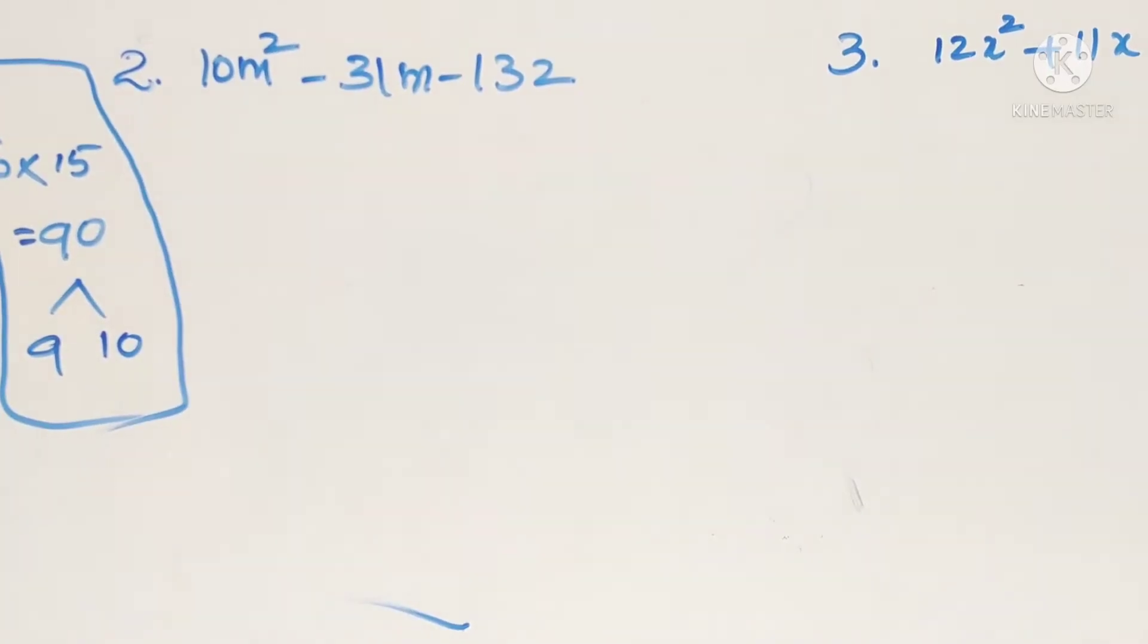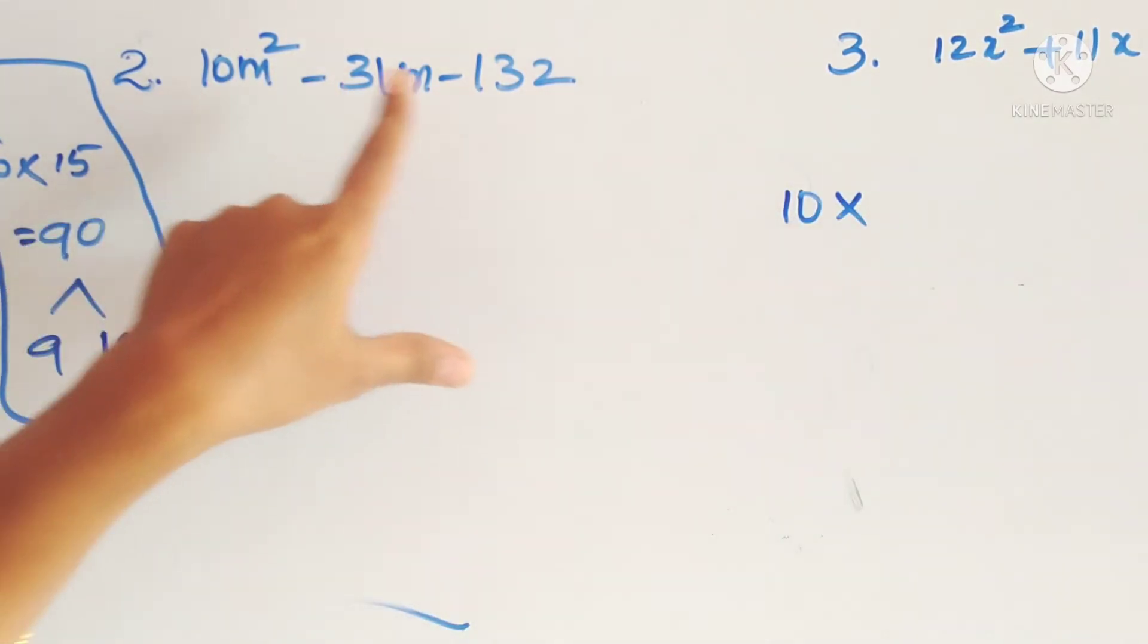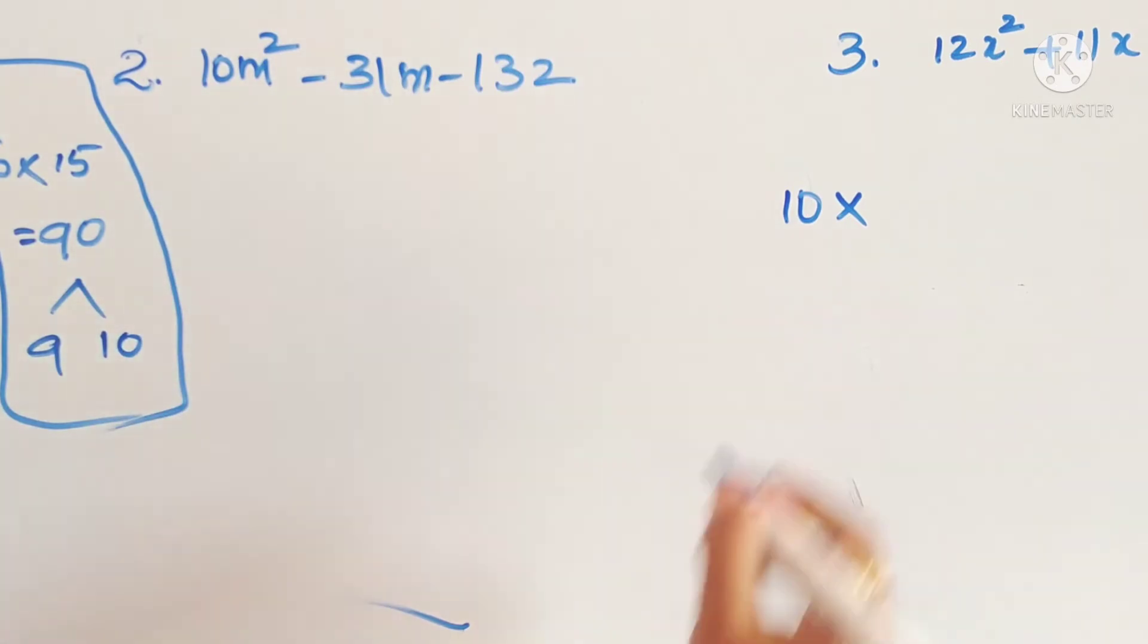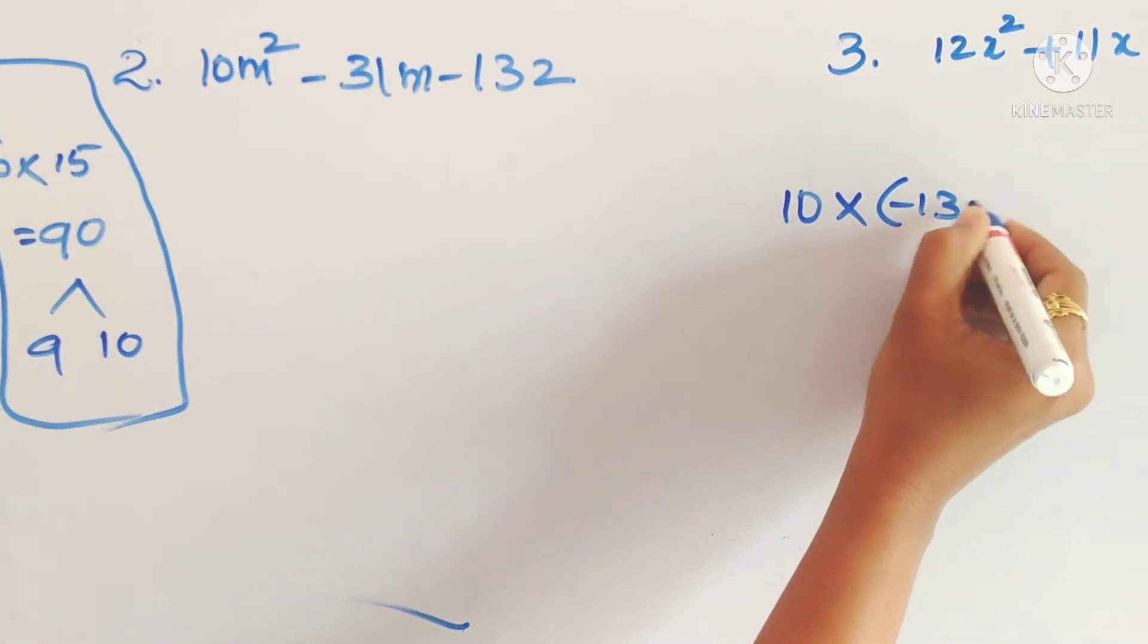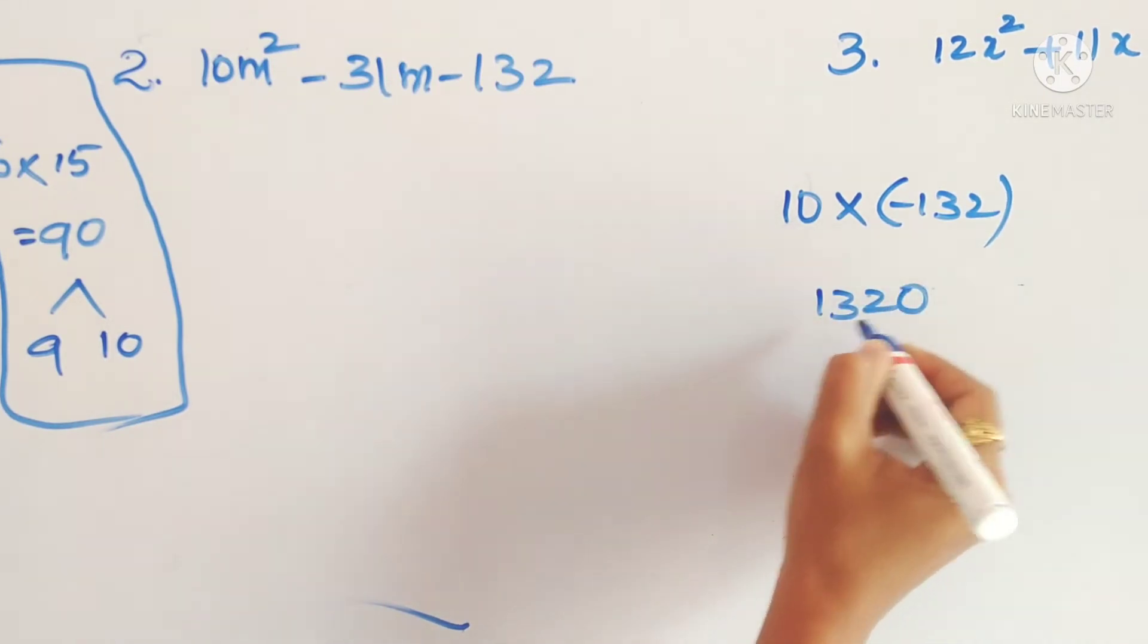Second problem: 10m square minus 31m minus 132. So what is the process? Take the coefficient of m square, that is 10, into the constant term here, minus 132. So 10 into 132 is 1320, and minus is there.